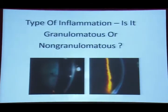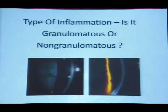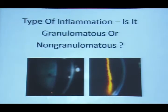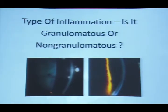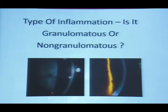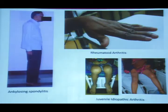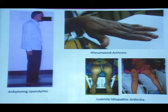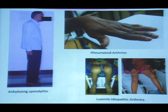We need to determine whether the inflammation is granulomatous or non-granulomatous. When a patient with non-granulomatous uveitis comes to the clinic with a systemic pattern, it is usually seen in ankylosing spondylitis, rheumatoid arthritis, and juvenile idiopathic arthritis.